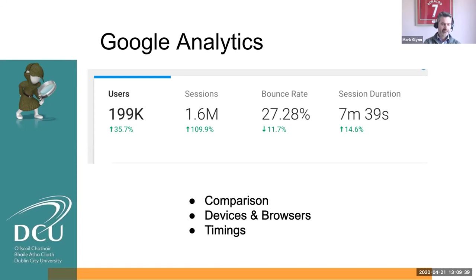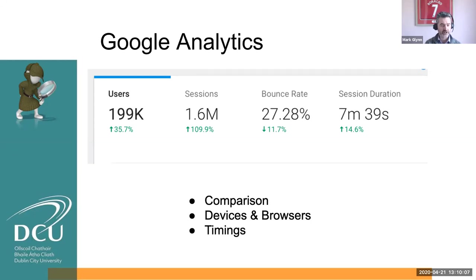Google Analytics can give you a tremendous amount of information. For us, it gives us information not just comparing one time period to another, but telling us what devices our students and users are using and what browsers they're using. That will influence what support resources we make and where we prioritize. In our case, the majority of our users are in Chrome, so we make sure all of our tutorials and screencasts are in Chrome. And our timings — when is the site particularly busy and when is it not — tell us when we can have downtime to do upgrades.